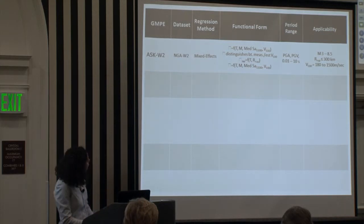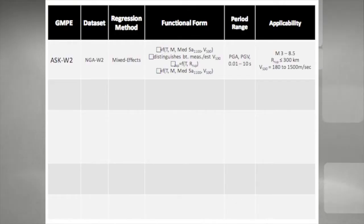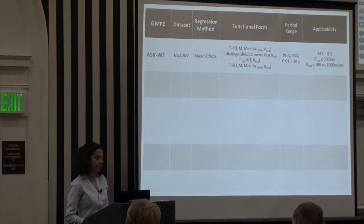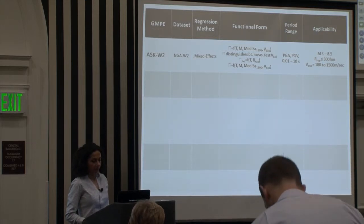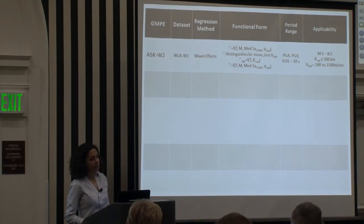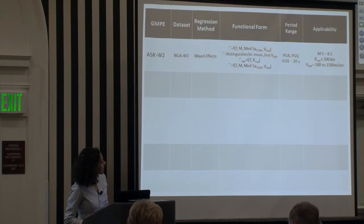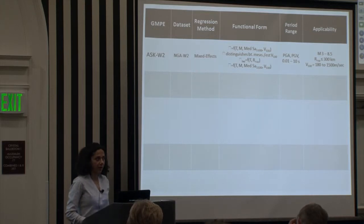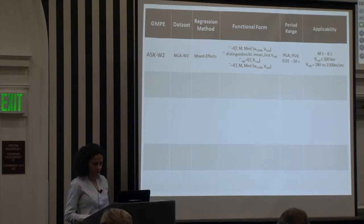Now we're into the NGA West 2 models. The Abrahamson et al. again used mixed effects algorithm. They now have their within event and between event standard deviations function of spectral period, magnitude, and including the effects of soil non-linearity. Their within event standard deviation distinguishes between measured versus estimated VS 30. One new feature is that they have their within event standard deviation for Japan only, and then they have it for the rest of the data.